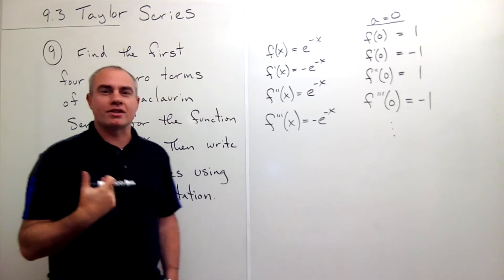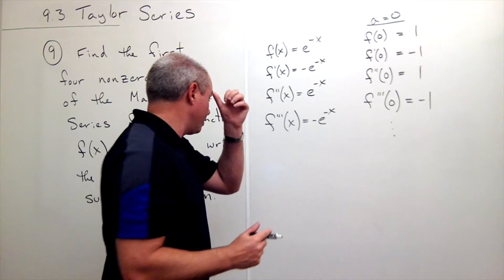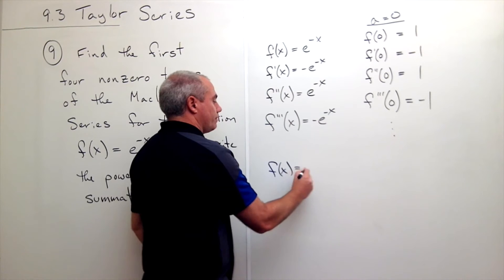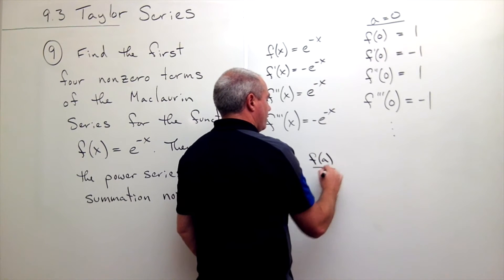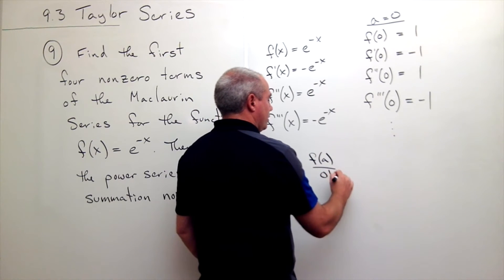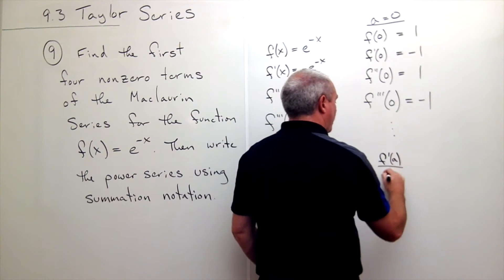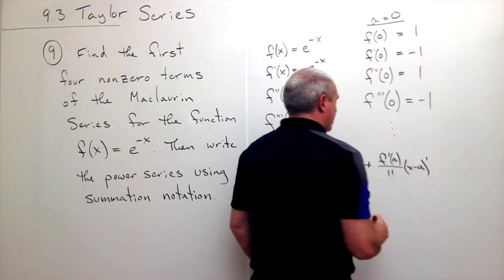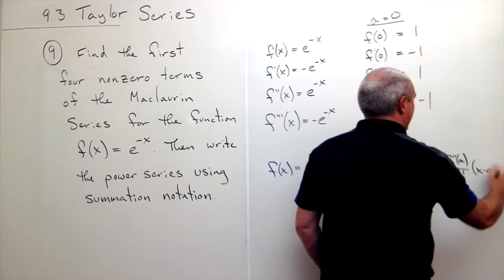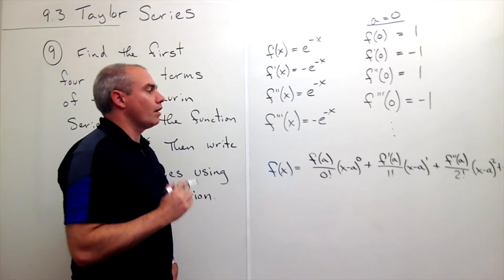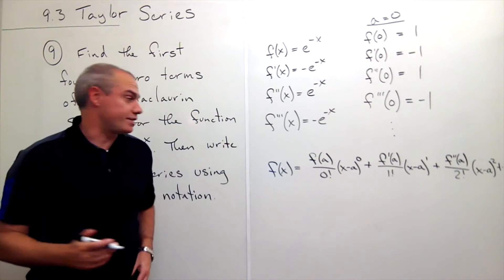So now we need to remember what is the form of a Taylor series or a Maclaurin series. The form looks something like this: f of x is going to be equal to the function f evaluated at a over zero factorial times x minus a to the zero power, plus f prime of a over one factorial times x minus a to the first, plus f double prime of a over two factorial times x minus a squared, and we just keep going. This is what we want to use to help us write the first four terms of our Maclaurin series in this case.